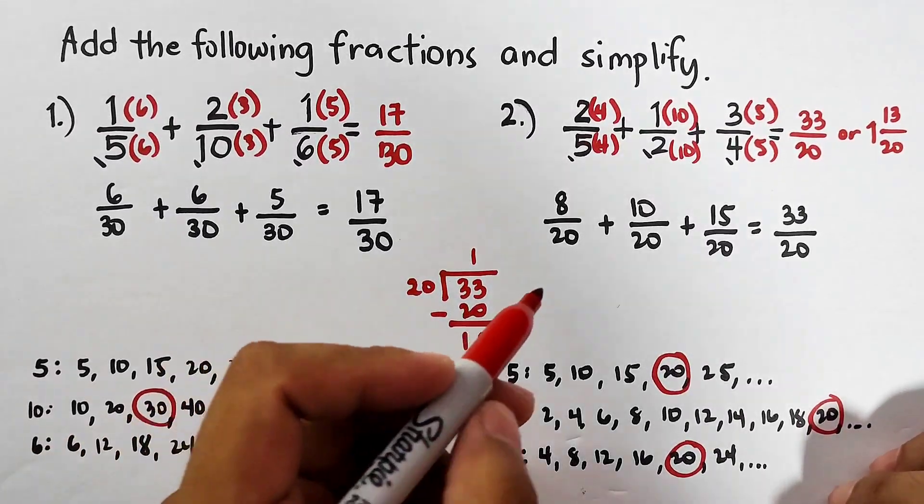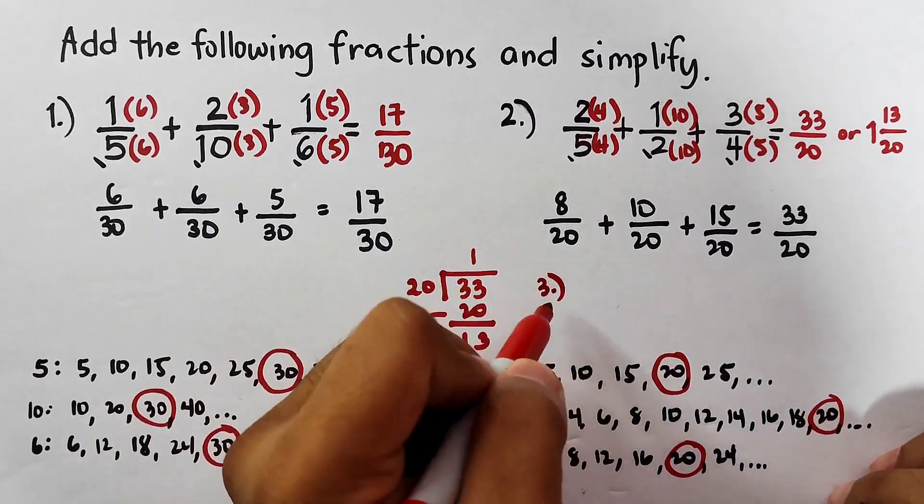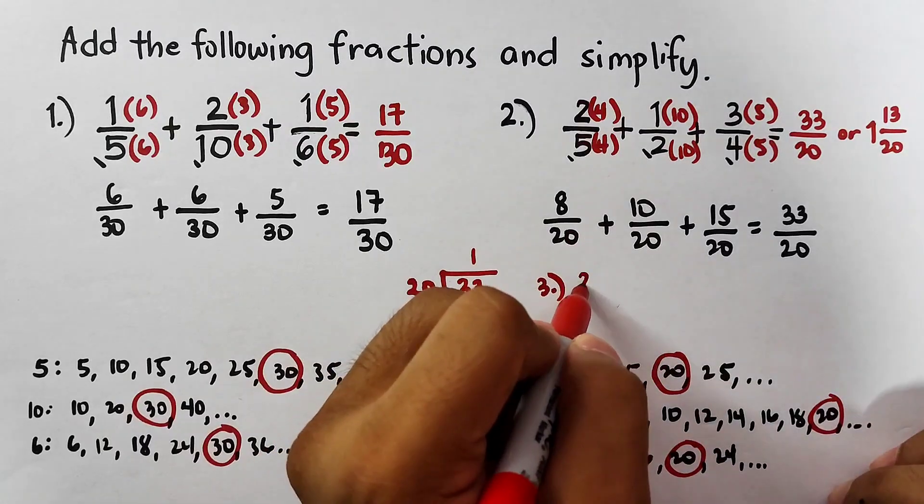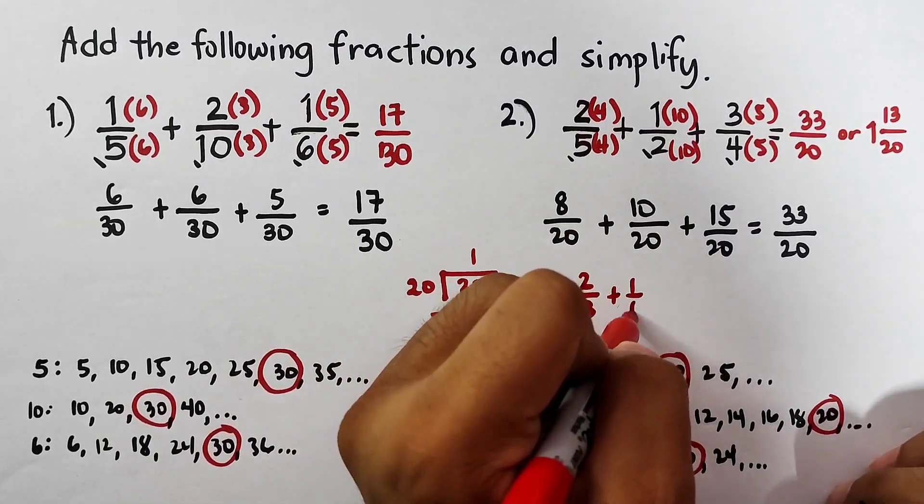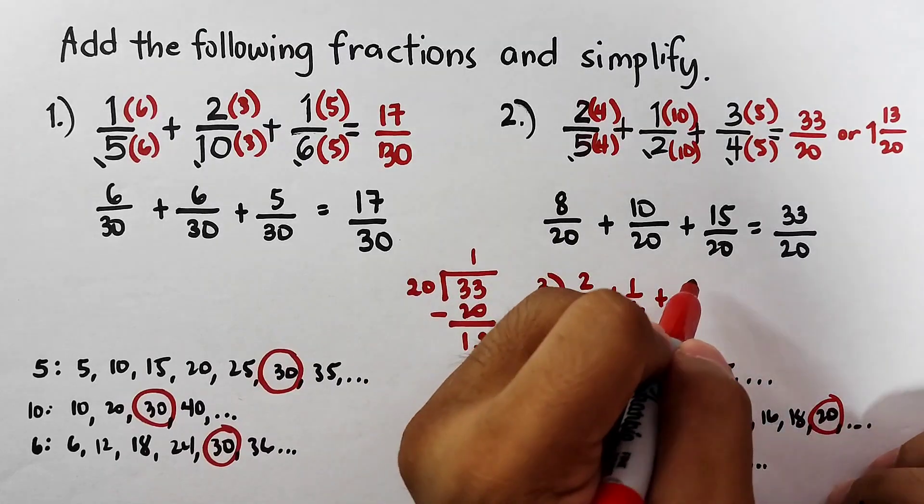For item number 3, I will let you answer this: 2 over 3 plus 1 over 6 plus 5 over 8.